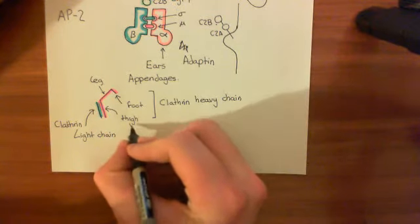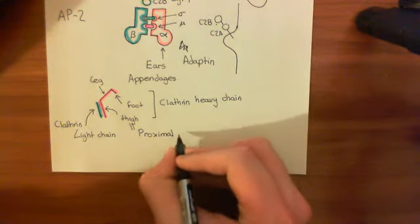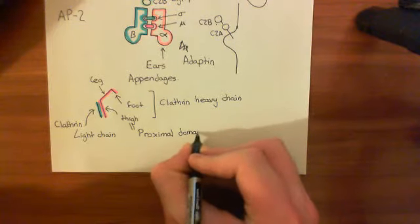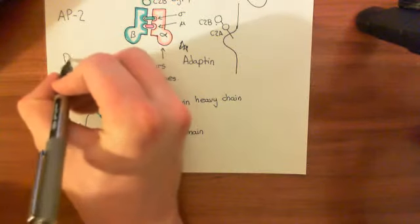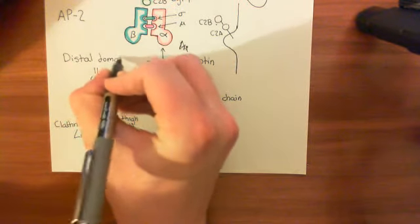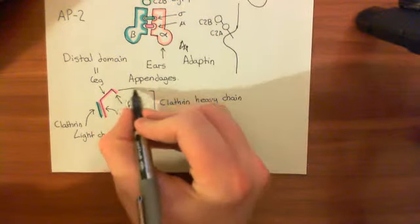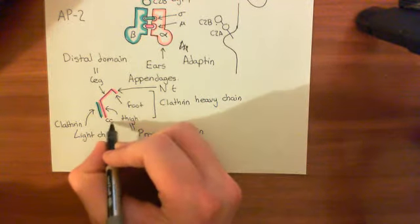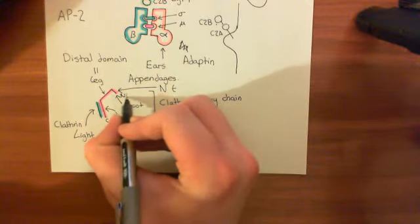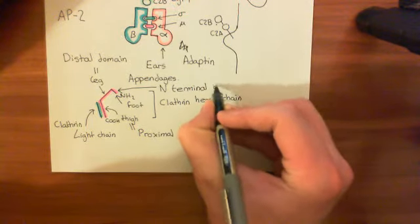The thigh of clathrin is known as the proximal domain. So this is the proximal domain of the clathrin heavy chain. Then the bit equivalent to the leg is the distal domain of the clathrin heavy chain — distal meaning far away from. And then finally the foot is called the N-terminal domain, because the amino terminus of the polypeptide is there, and the carboxyl terminus of the protein is at the other end.